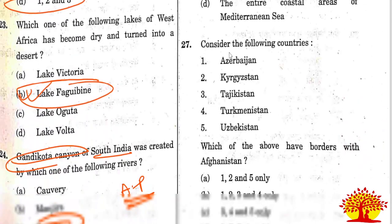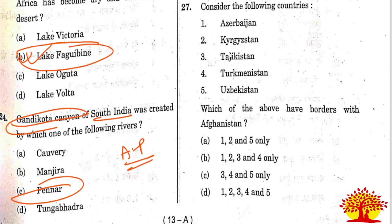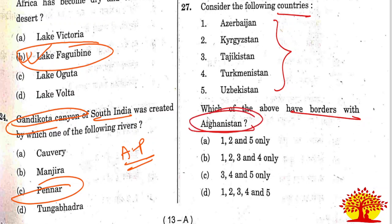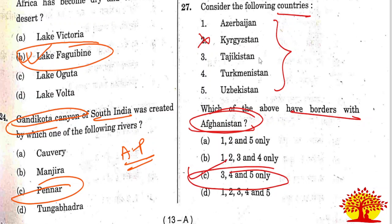Twenty-seventh question: which of the following countries have borders with Afghanistan? Option C is the correct answer - countries 3, 4, and 5. If you eliminate option 2, Kyrgyzstan, which does not share a border with Afghanistan, you get Option C as the right answer.